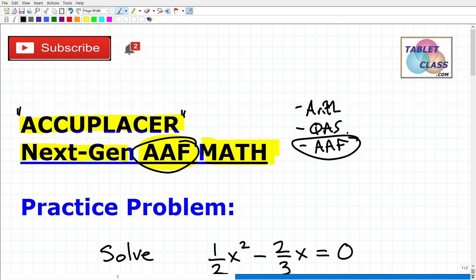The AAF is the most advanced Accuplacer. So if you're looking to place into maybe calculus, pre-calculus, a higher-level math course, your college and university is going to definitely have you take the Accuplacer AAF. They probably determine that by looking at your transcripts and already seeing what math courses you have taken or what they think is your current math skills.